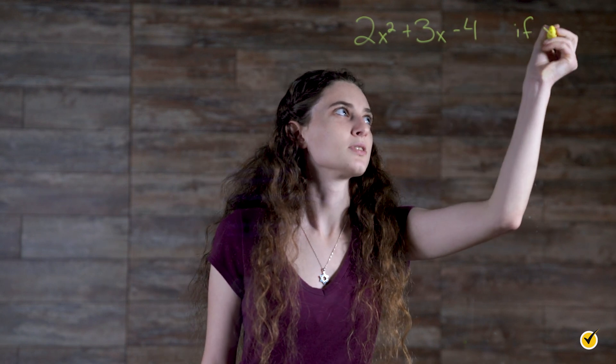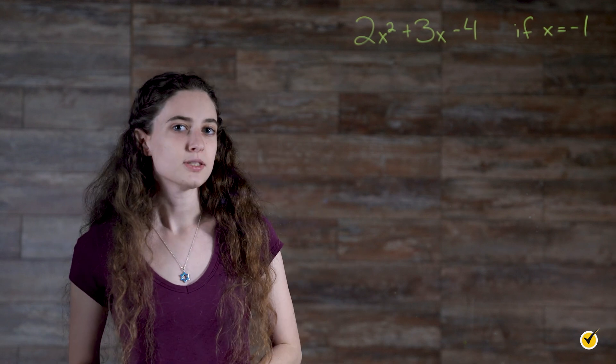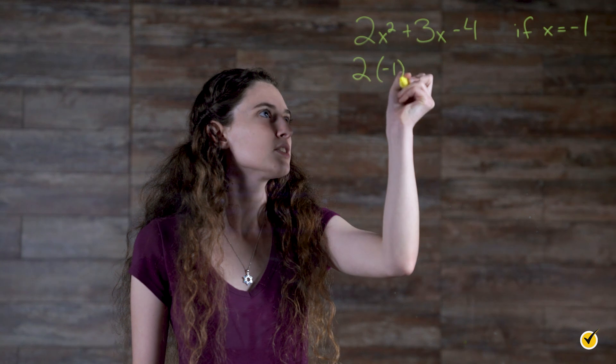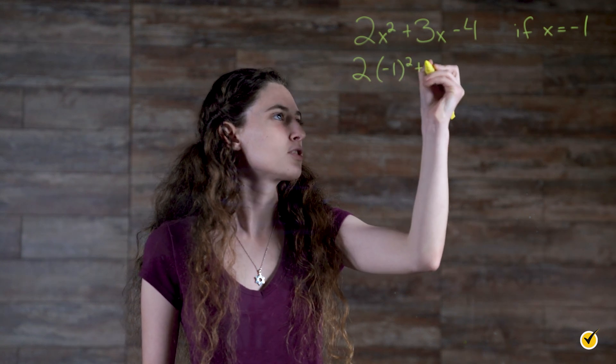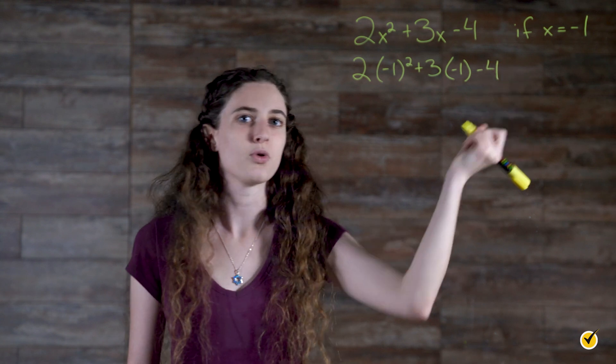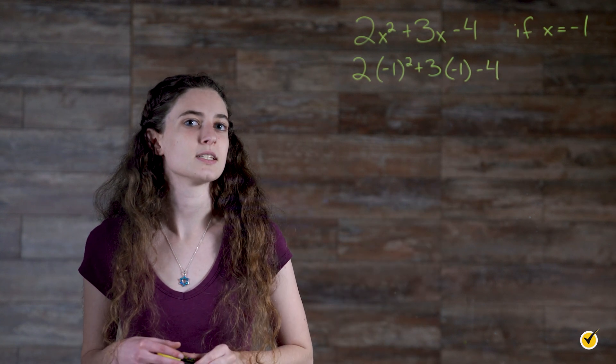2x squared plus 3x minus 4 if x equals negative 1. Substituting the value of negative 1 for the variable x in this expression is pretty straightforward. That gives us 2 times negative 1 squared plus 3 times negative 1 minus 4. We have placed the negative 1s in parentheses to contain their value.